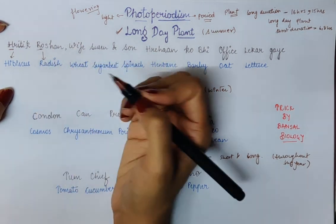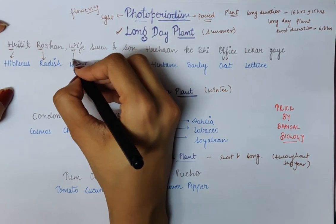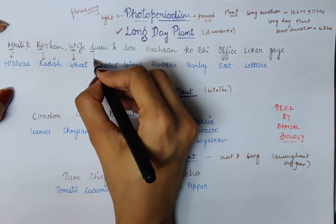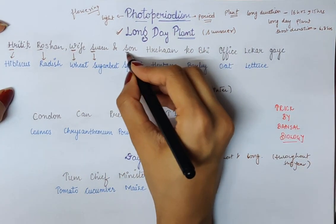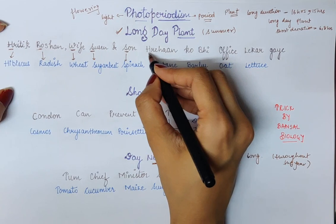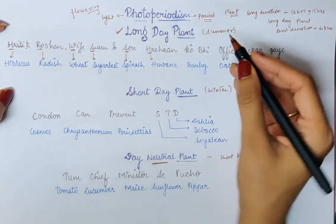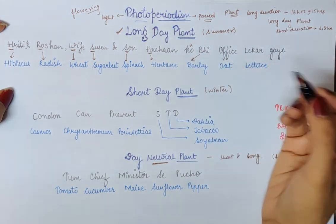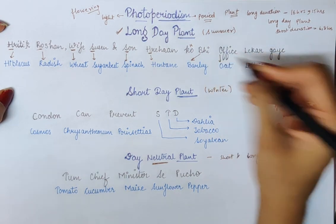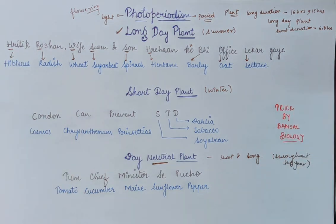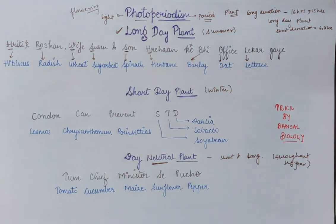From 'Roshan', R gives us radish. From 'wife', W gives us wheat. From 'Suzanne', S gives us sugar beet. From 'sun', S gives us spinach. From 'Rihan', H gives us hyacinth bean. 'Ko' doesn't stand for anything. From 'bhi', B gives us barley. From 'office', O gives us oat. And from 'le kar', L gives us lettuce. So that was the long day plant mnemonic.